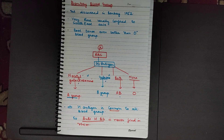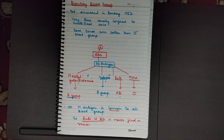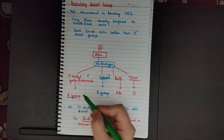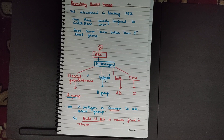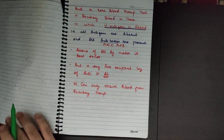If you have the Bombay blood group, you can save this person — otherwise you cannot. What is the advantage of this blood group? You can give this blood to any other blood group — it is a universal donor, because it has no antigen: neither H, nor A, nor B. However, in terms of being a recipient, it is very poor. It can donate blood to everybody but cannot receive blood from anybody.